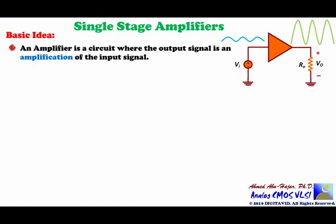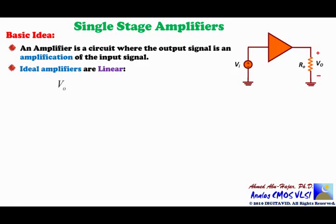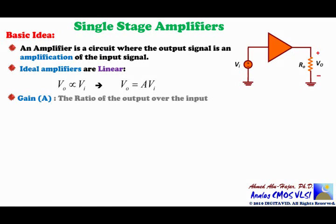Amplifiers take the input signal, amplify it, and send it to the output. Ideal amplifiers are linear, meaning V_out is proportional to VI. Replacing the proportionality with a constant, we can state that V_out equals A times VI, where A is called the gain of the amplifier — the ratio of the output over the input, telling us how many times the output is bigger than the input.